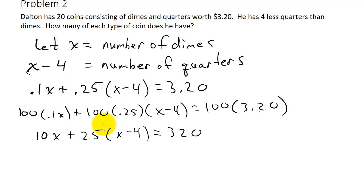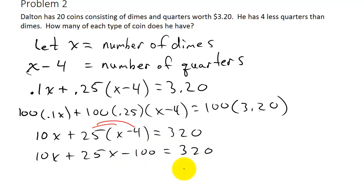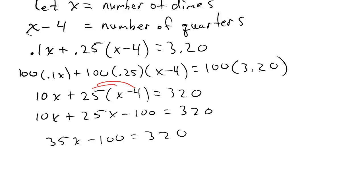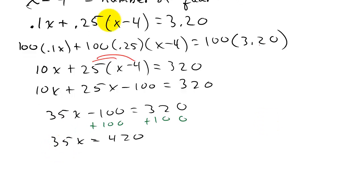Distributing the 25 gives 10x plus 25x minus 100 equals 320. Combining like terms: 35x minus 100 equals 320. Adding 100 to both sides gives 35x equals 420. Dividing both sides by 35 gives x equals 12.